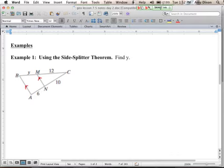There's several ways to go about doing it. We can do 12 is to Y, 12 is to Y, as 10 is to 6, that's one way. You could also set it up, 12 is to 10, as Y is to 6. So there are multiple ways to go about setting up this proportion.